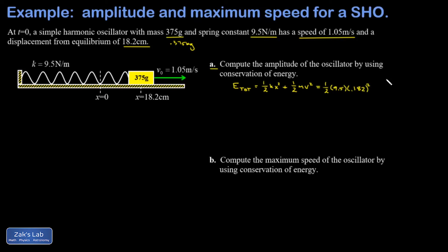We plug in all the numbers here. Notice that I have to change the centimeters to meters, so that's 0.182 meters all squared. We plug the mass in the correct units and the squared speed. When we run the numbers on this we get 0.3641 joules.